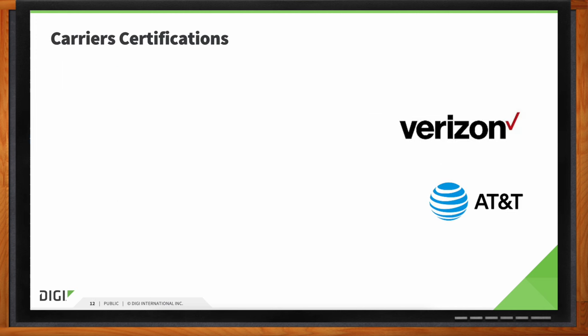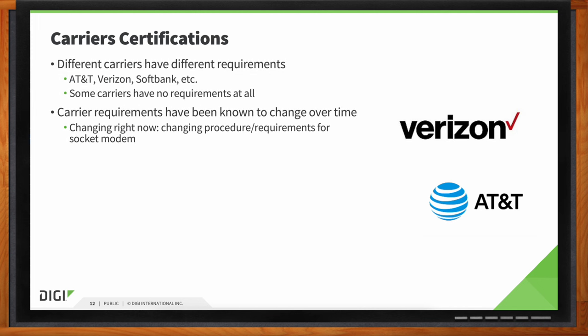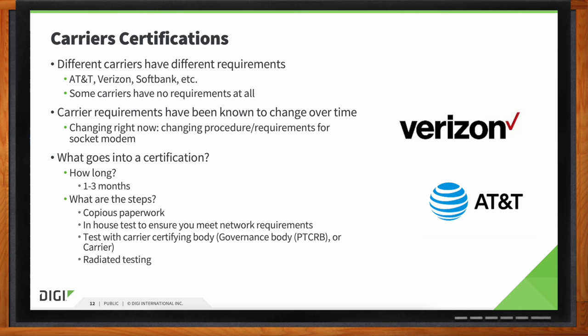What about carrier certifications? For companies deploying products specifically into North America — US, Canada, and Mexico — carriers often require carrier certification to get devices onto the network. Digi commits to releasing all products with carrier end-device certifications, and with this embedded smart modem, that end-device certification carries through to your individual product. We get this with AT&T and Verizon in the US, as well as upon customer request for other carriers such as Rogers, Telus, and Bell in Canada, or AT&T affiliates in Mexico.